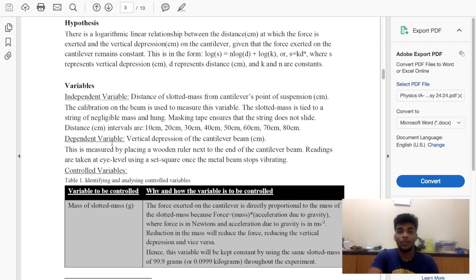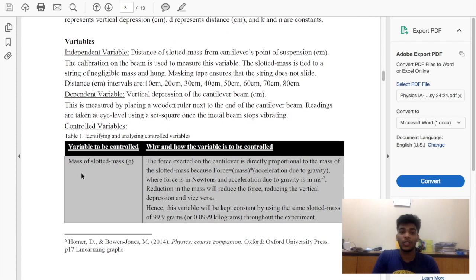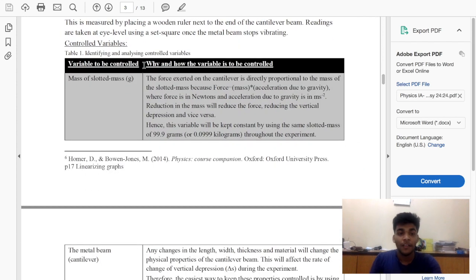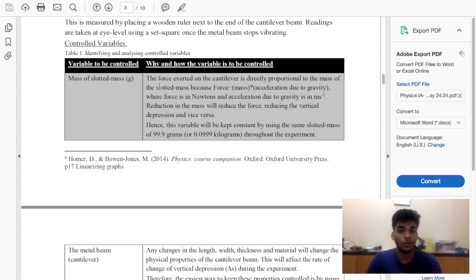Find something else like a pendulum experiment and create an equation. Creating an equation would be great for your IA. Variables: independent variable, dependent variable, controlled variables. For your controlled variables, create a table: variable to be controlled, and why and how the variable is to be controlled.